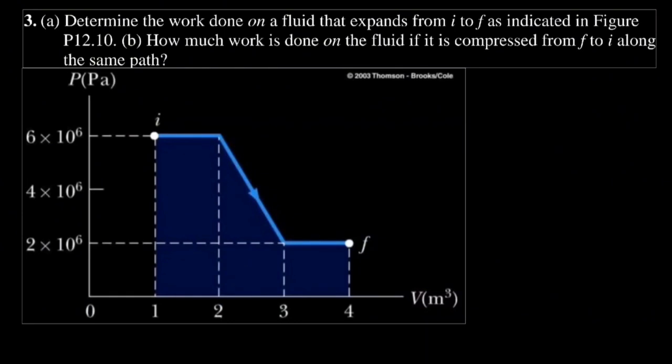Question number 3: Determine the work done on a fluid that expands from I to F as indicated in the figure. How much work is done on the fluid if it is compressed from F to I along the same path? The work done in a PV graph is equal to the area beneath the graph.